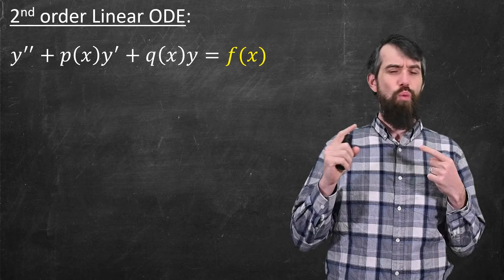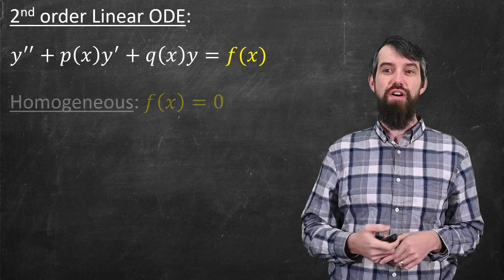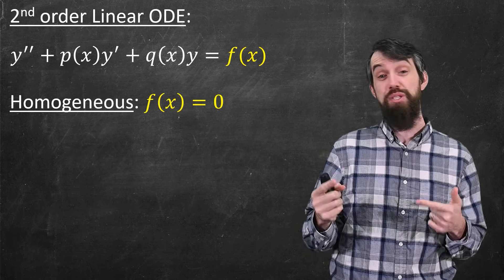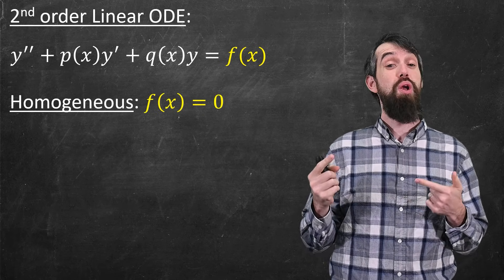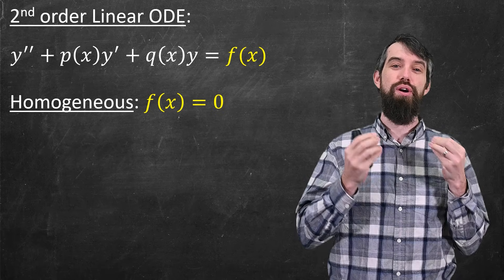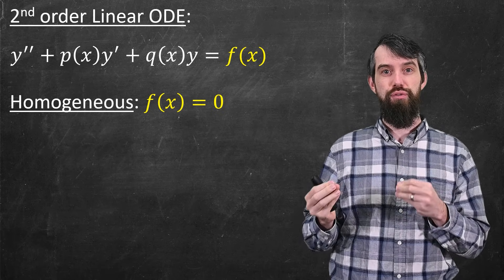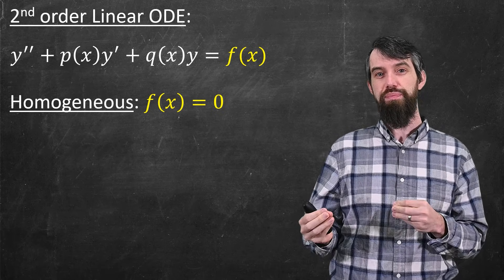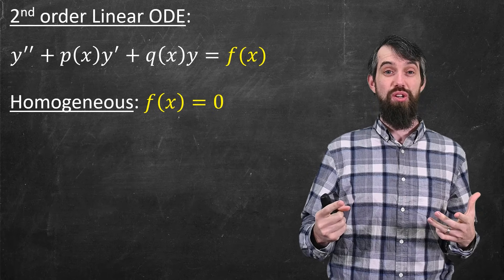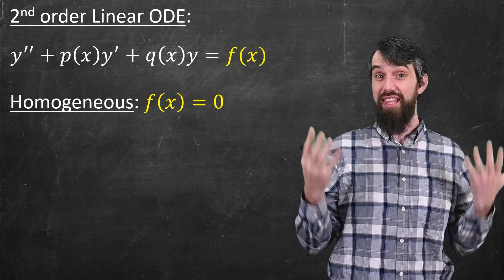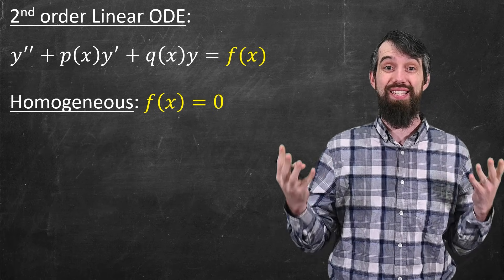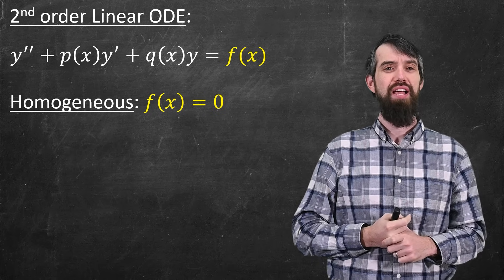One final piece of terminology: if the function on the right-hand side f happens to be zero, then we call this a homogeneous second-order linear differential equation. What we want to figure out in this video is the theory associated with this class of differential equations.